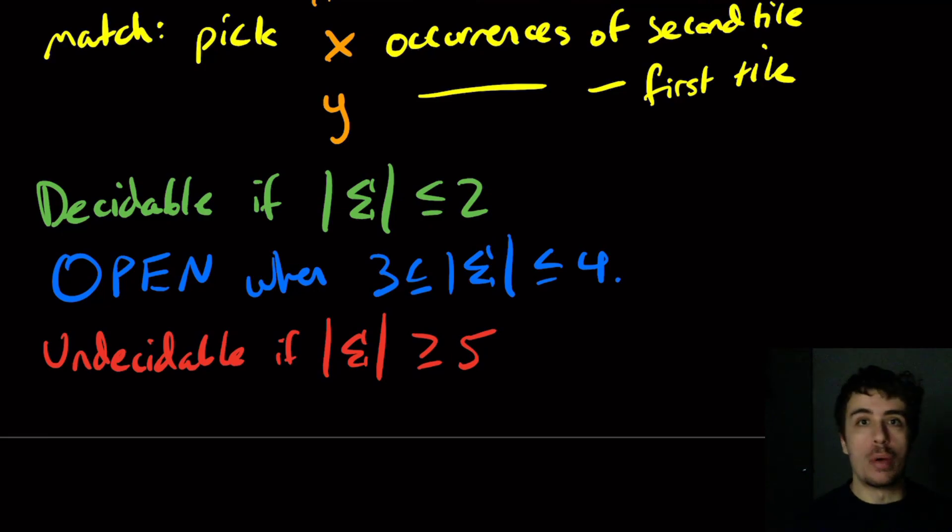but it's open when the size of the alphabet is between three and four. And so no one knows whether or not the problem for three characters or four characters is undecidable or not. It's decidable if you have two characters or fewer. It's a complicated proof. And it's undecidable if you have more than five characters. Again, a complicated proof. But we don't know the answer for these two. Maybe it is. Maybe it isn't. We have no idea.